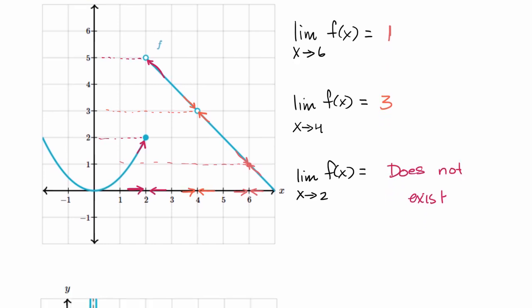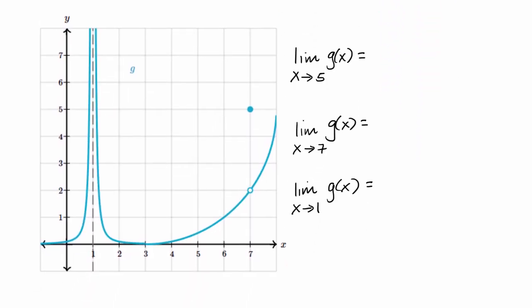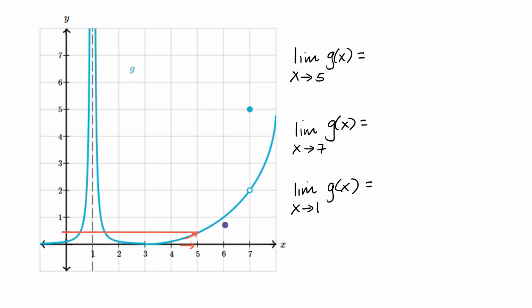Let's do another function to get more cases of looking at graphical limits. We have the graph of y equals g of x. Pause this video and have a go at it — see if you can figure out these limits graphically. First, we have the limit as x approaches five of g of x. As we approach five from the left-hand side and from the right-hand side, it looks like we are approaching the same value. Just eyeballing it, it looks like it's about 0.4. So I'll say this limit definitely exists, approximately 0.4 — though when looking at a graph it's not that precise; it might be 0.41 or even 0.41456789. We don't know exactly just looking at this graph.